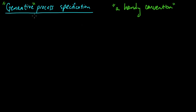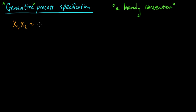So what is it? Instead of giving you a formal definition, let me just give you a little example. This will be the generative process for a particular distribution. Let's say we've got x1 and x2 as our random variables, and let's say that they're Bernoulli with probability one-half, and independent.